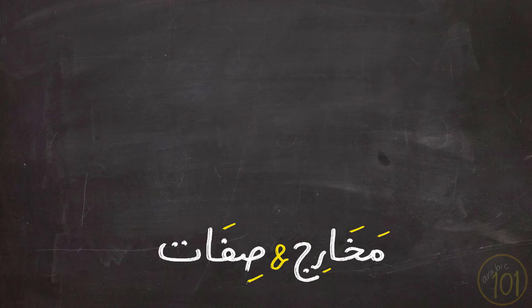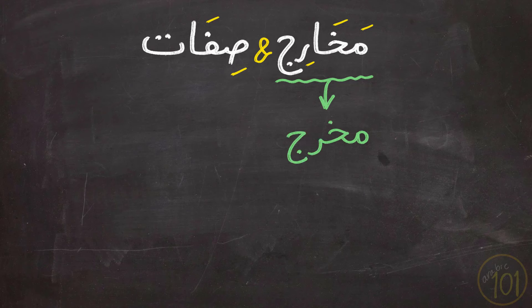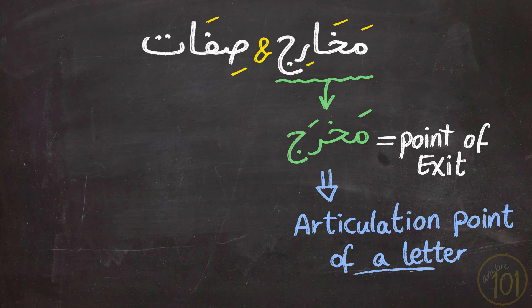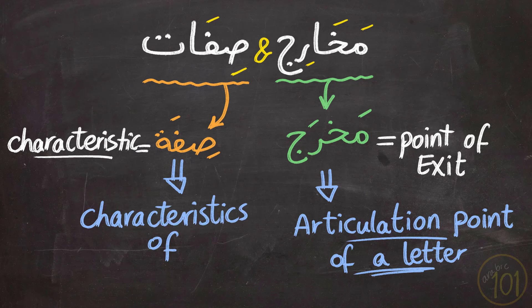First of all, what is makharij and sifat? The word makharij is plural of makharaj and literally, it means an exit point. In terms of tajweed, it refers to the articulation point from which a sound is released. As for the word sifat, it is the plural of the word sifa, which means a characteristic. So, sifatul huroof is the characteristics of letters.